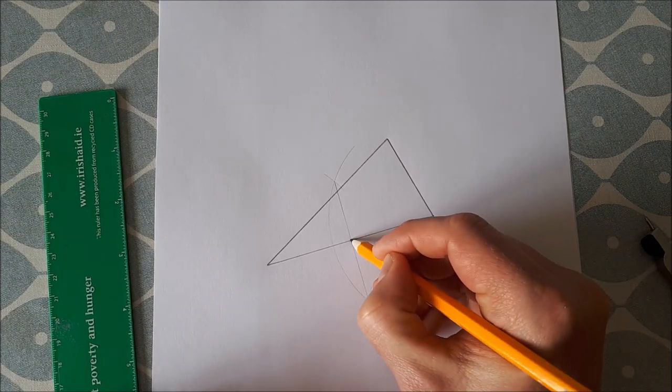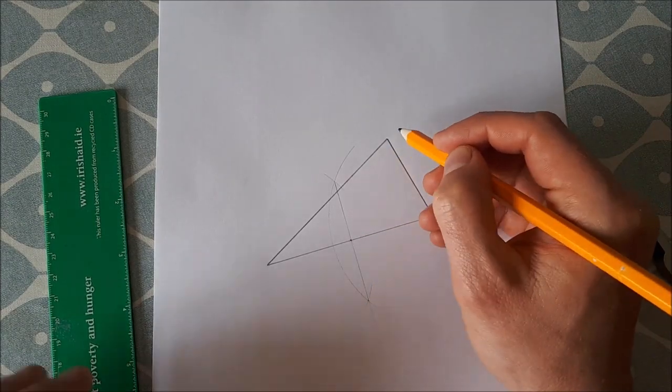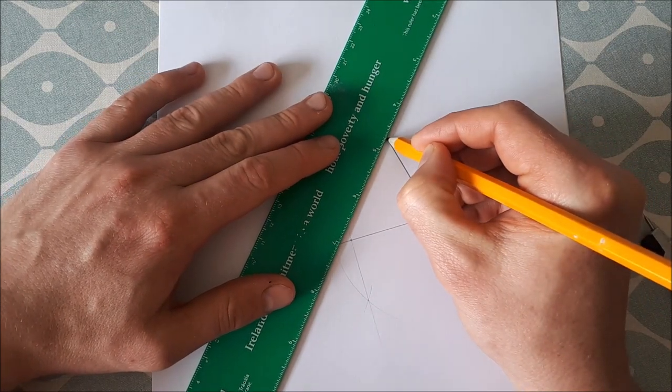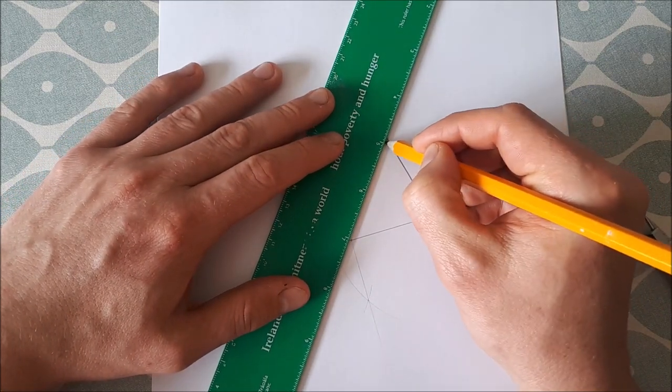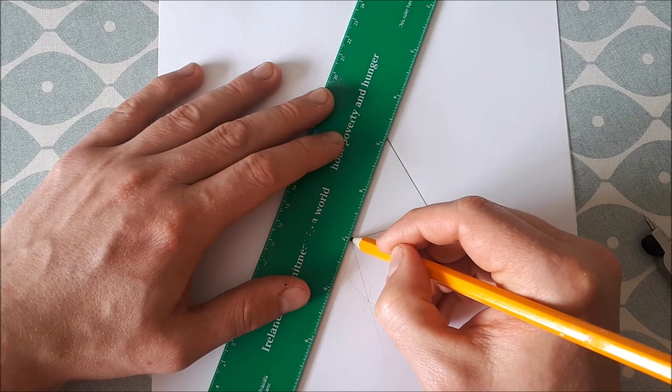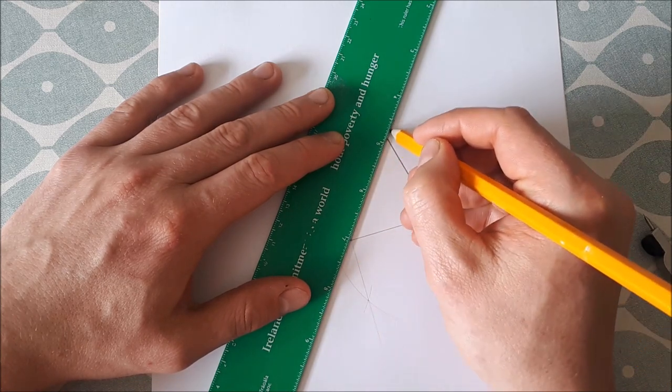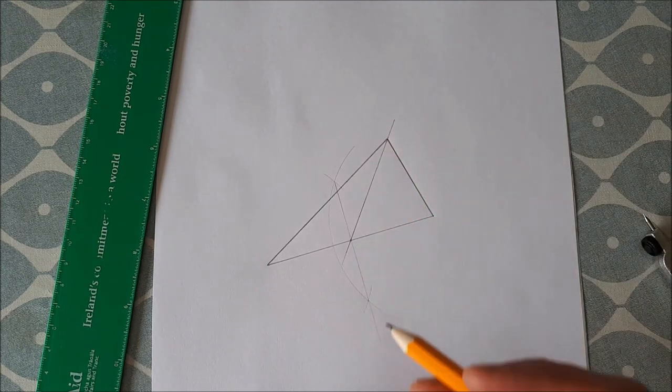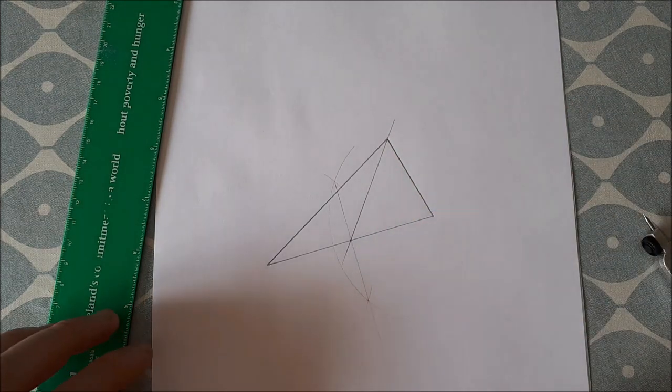We then join the bisector of the line to the opposite vertex. So join the vertex to the point of intersection. This line here is our median, so our centroid is somewhere on that median.